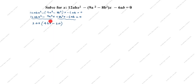Now for the remaining terms, the common factor is 2b. We take 2b outside: open bracket 4bx minus 3a close bracket equals 0. So the full factored form is 3ax(4bx minus 3a) plus 2b(4bx minus 3a) equals 0.